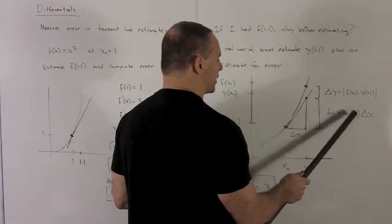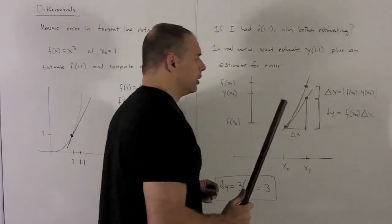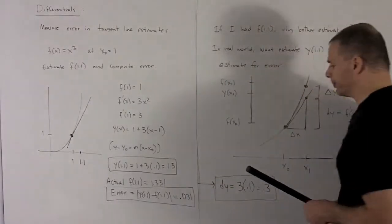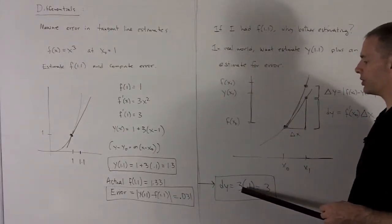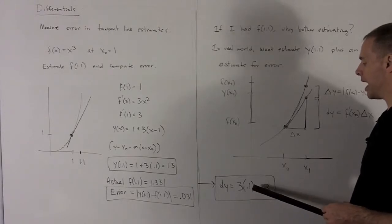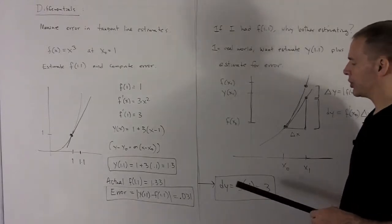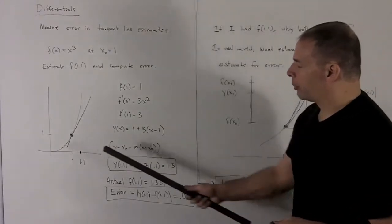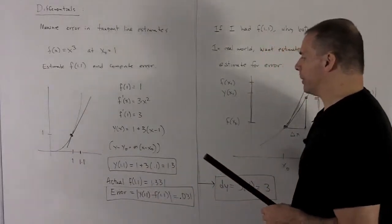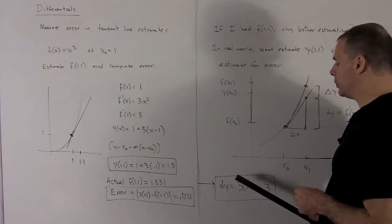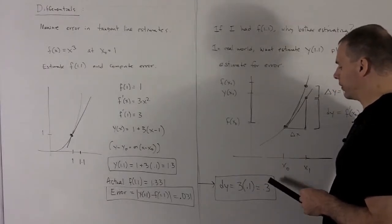All right, if dy is equal to f'(x0) times delta x, we go back to our original situation. I'm going to have dy is equal to the slope at x0, which is 3, and then that's going to be times 0.1, which is going to be the difference in the point we're estimating from and the actual point. So that's going to be 0.1. So our dy is going to be equal to 0.3.